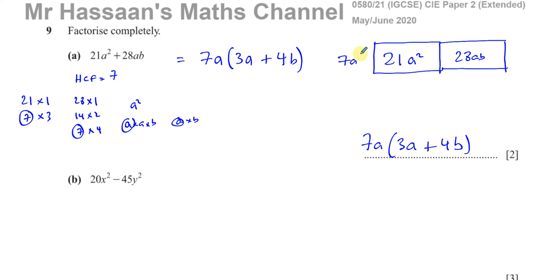What do I have to multiply 7a by to give me this? It's going to be 3a. And what do I have to multiply 7a by to give me this? Well, it's going to be 4b. So 7a times (3a + 4b) gives me this. That's another visual way of doing it.